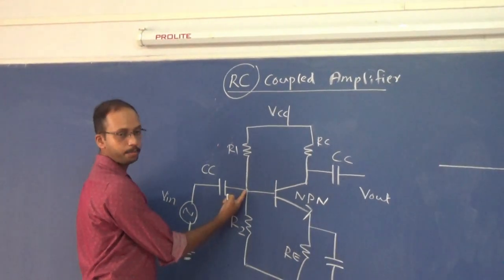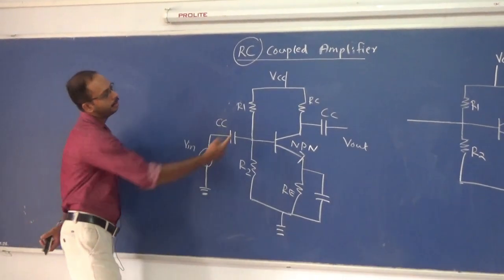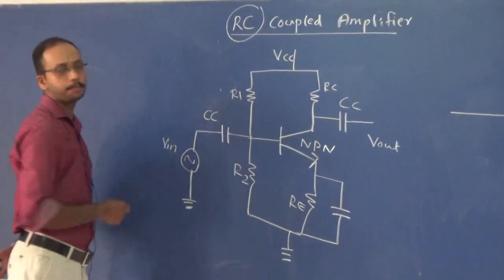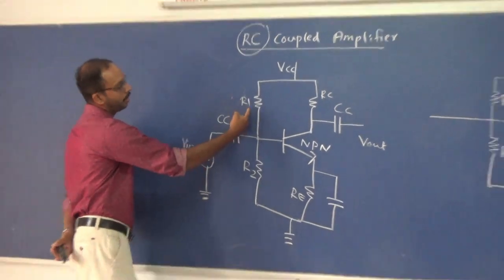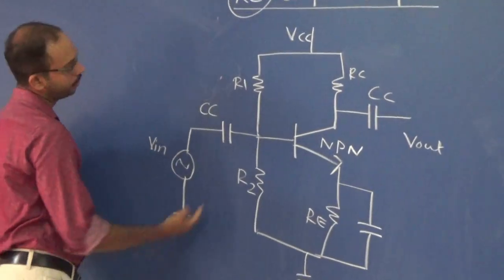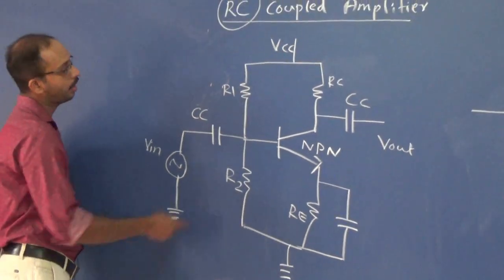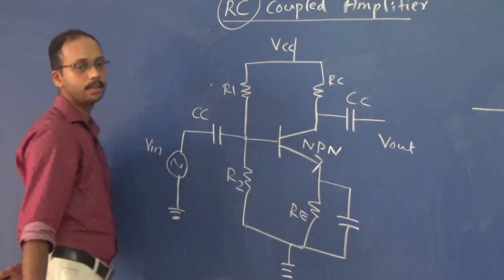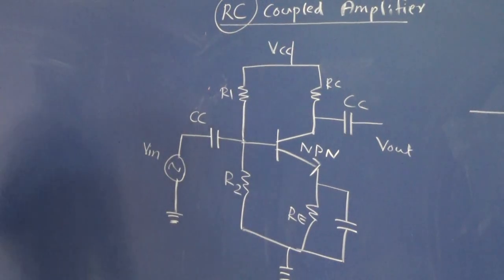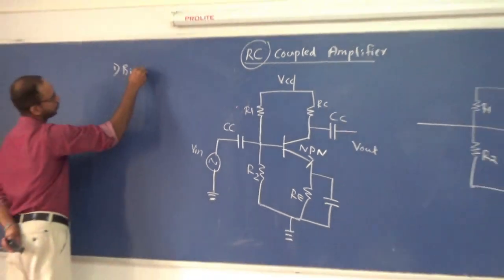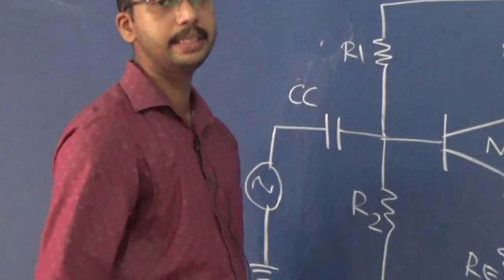In this circuit diagram we can see various parameters like VCC, which is the supply voltage. We also see resistors R1 and R2, which form the voltage divider network. R1, R2, and RE are mainly used for proper biasing and stabilization of this circuit. The biasing method used here is voltage divider biasing.